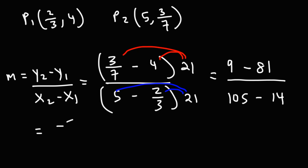9 minus 84, that's negative 72. 105 minus 14, that is, so 105 minus 10 is 95, minus 4, that's going to be 91. Now, it doesn't look like we could simplify this fraction. But let's see if we could. 91 is 13 times 7. 72 is 8 times 9. So there's nothing really that we can cancel, so we're going to leave our answer like this. Negative 72 over 91.